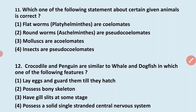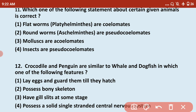Next: which statement about certain animals is correct? Options — flatworms are coelomate; roundworms or Aschelminthes are pseudocoelomates; mollusks are acoelomates; insects are pseudocoelomates. The correct answer is that roundworms (Aschelminthes) are pseudocoelomates, which has already been discussed.